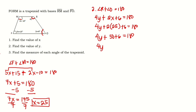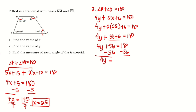So we have 4y + 56 = 180 degrees. Applying the subtraction property of equality, subtract 56 from both sides: 4y = 124. Dividing by 4, the value of y is 31.